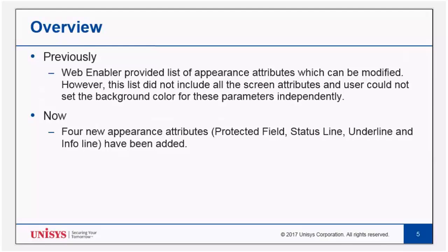Previously, WebEnabler allowed a user to change only the text color for an available display attribute. However, background color could not be changed. Similarly, there was no provision to update the color scheme of the application's information bar.